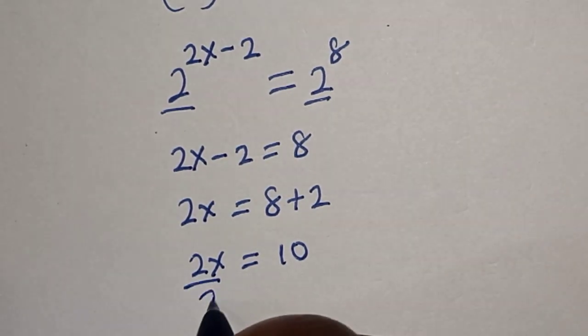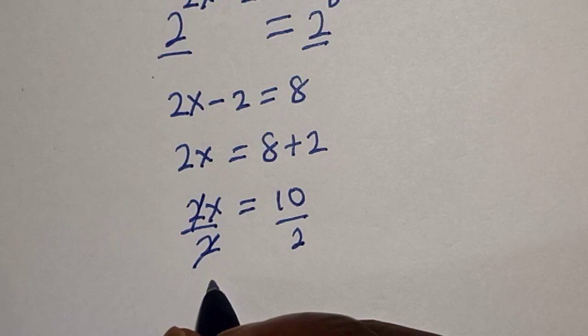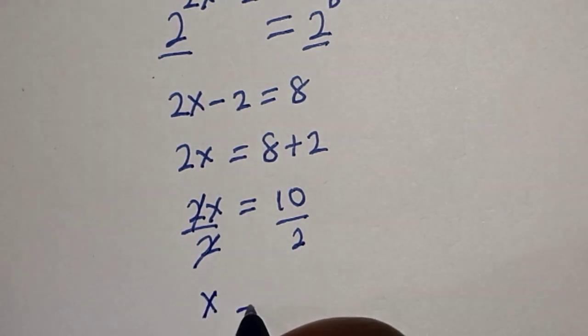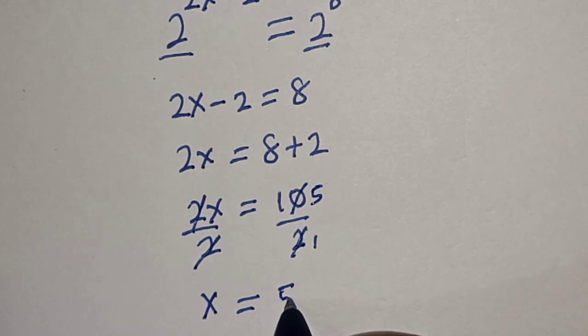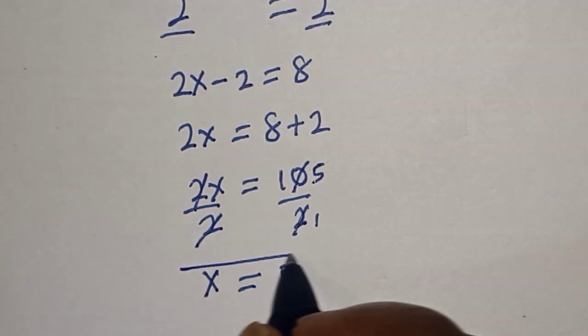So 2x is equal to 10. Let's divide both sides by 2. This will cancel this. x is equal to 5, and that is our final answer.